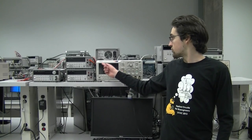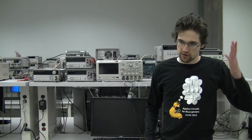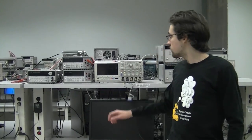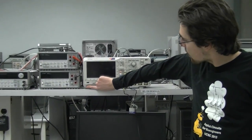This is an explanation of how to use the Tektronix 2024 oscilloscope here in Circuits Lab. To begin, turn the oscilloscope on by pressing the power button here.